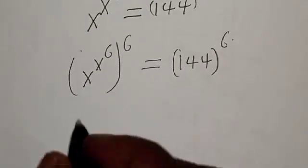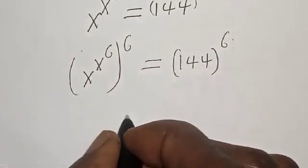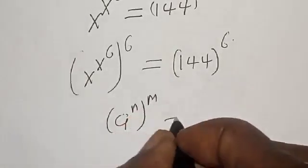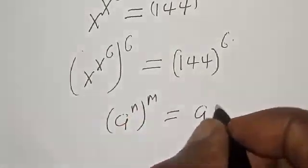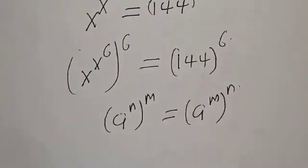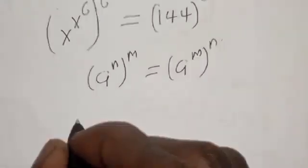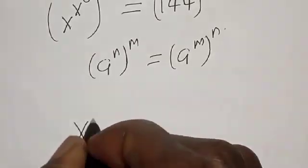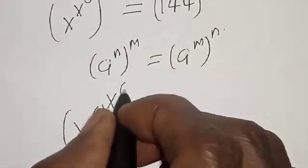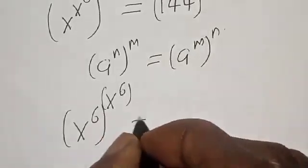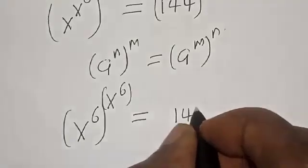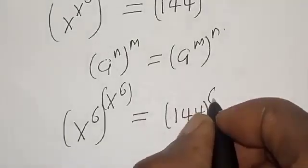On the left hand side, remember: if you have a raised to power n raised to power m, it is the same thing as a raised to power of m raised to power of n. Now we have s raised to power of s raised to power of 6 is equal to 144 raised to power 6.